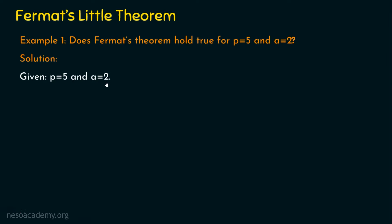Let's verify the initial conditions are met. Is p a prime number? Yes, five is a prime number. Is a a positive integer, and is a not divisible by p? Yes, the initial conditions are met. So we can already say that Fermat's Theorem holds true for p equal to five and a equal to two.